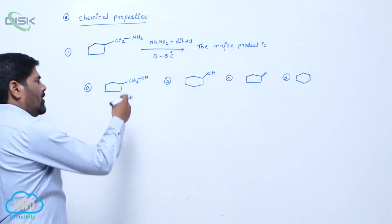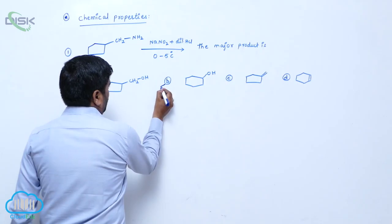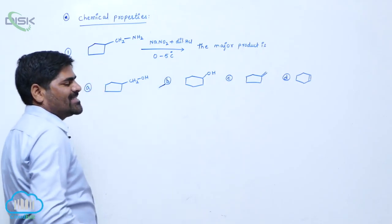In all these cases, in this particular case, the major product is which one? Cyclohexanol.